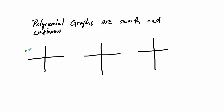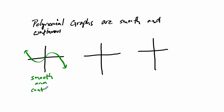Smooth means that the curvature isn't rough. The smoothness here — you can see in this graph, this is smooth. And it's continuous; there are no breaks in the graph. So this is a polynomial graph.